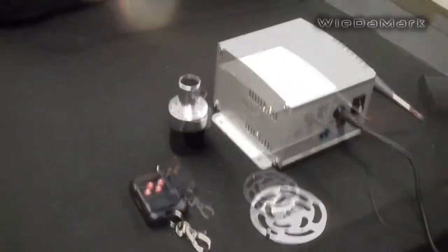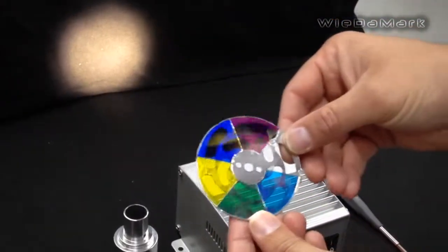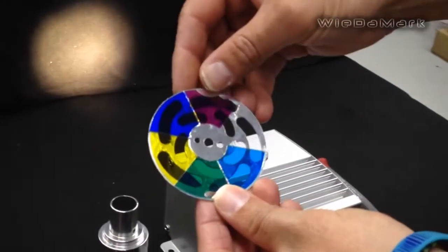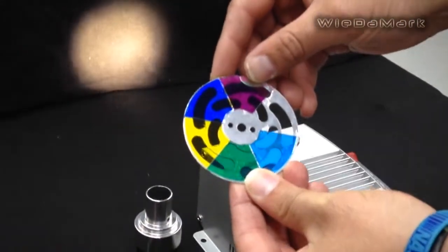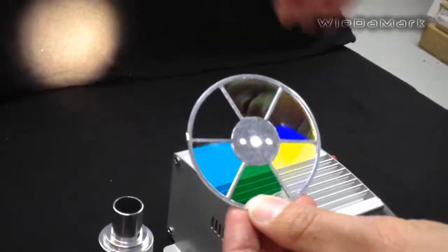As an added option, you can purchase our color twinkle wheel. This illuminator will allow you to twinkle the colors. You can also get the regular color wheel with no twinkle and it will just do solid color.